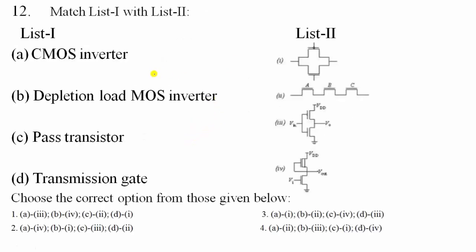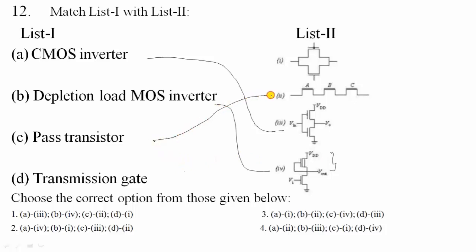Question 12: Match the following MOS circuit types. CMOS inverter uses both NMOS and PMOS transistors. Depletion load MOS inverter replaces the pull-up network with a depletion mode NMOS transistor. Pass transistor is a single transistor switch. Transmission gate uses both PMOS and NMOS transistors in parallel to pass strong logic 1 as well as strong logic 0. Option 1 is correct.